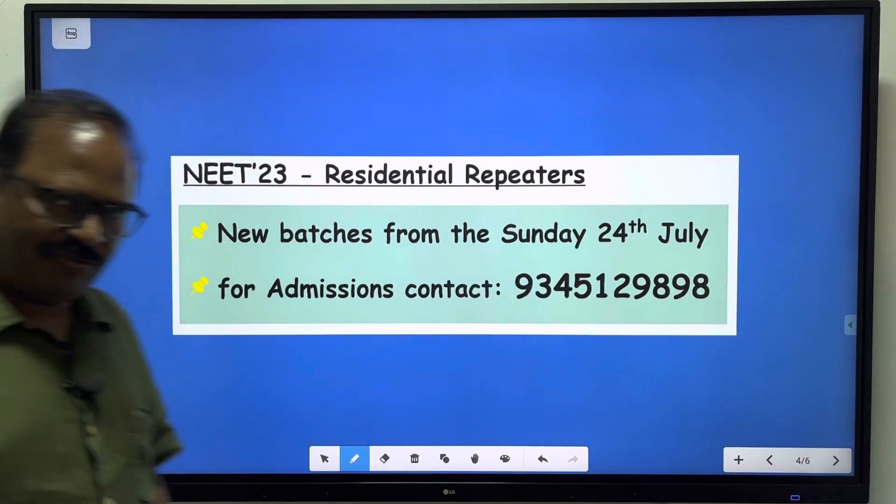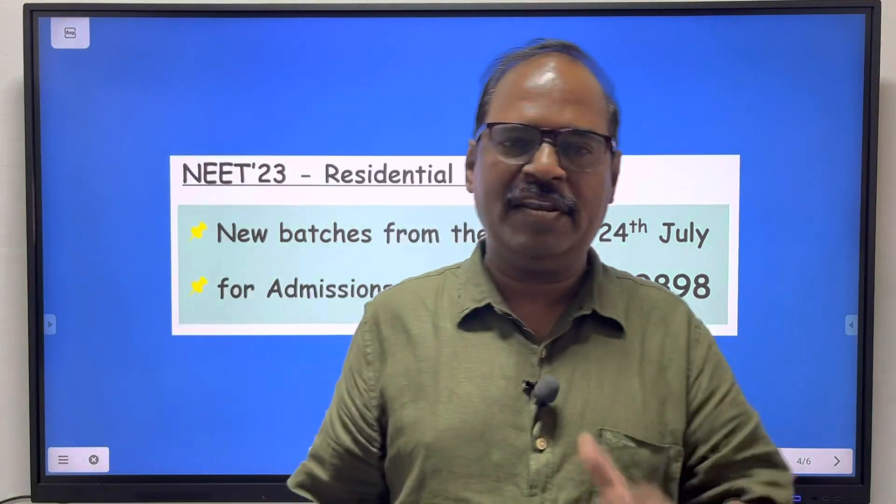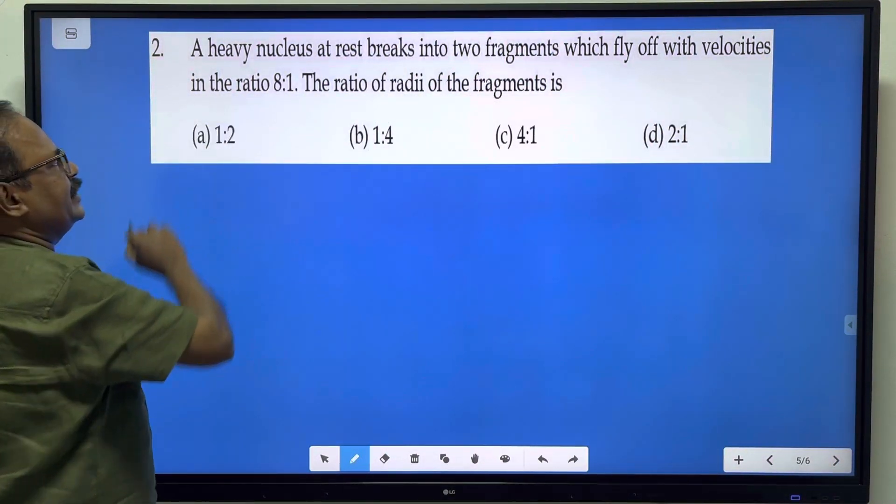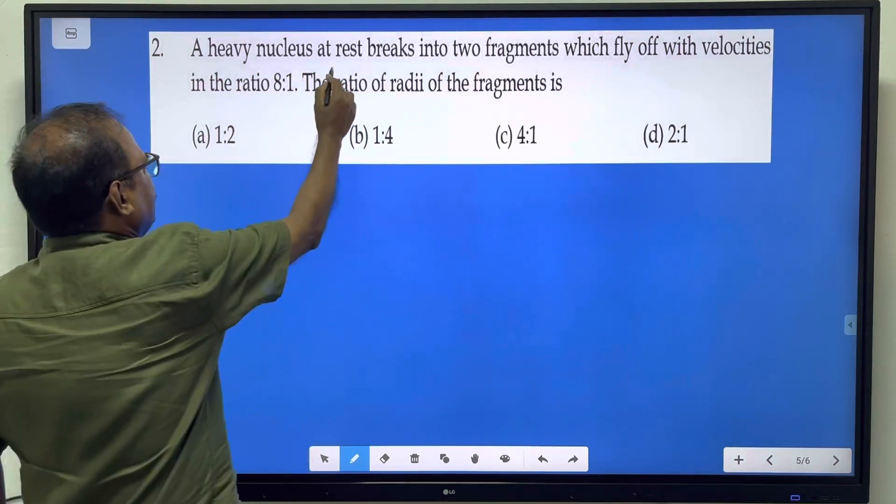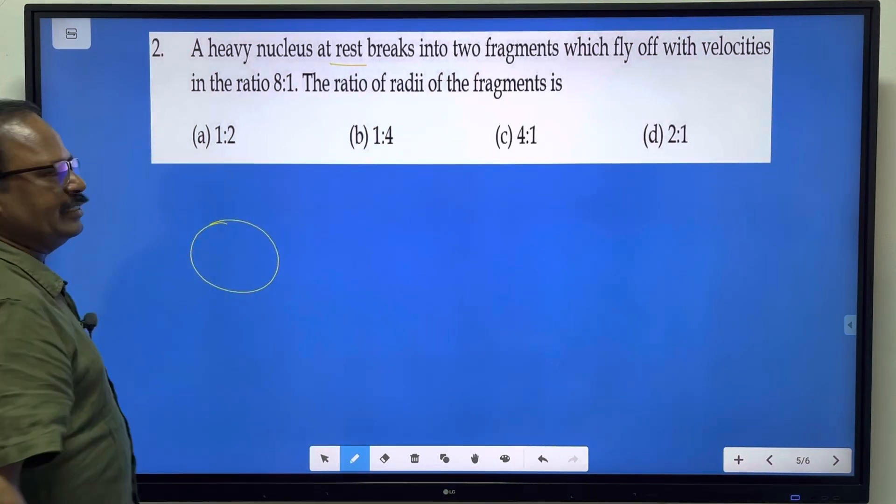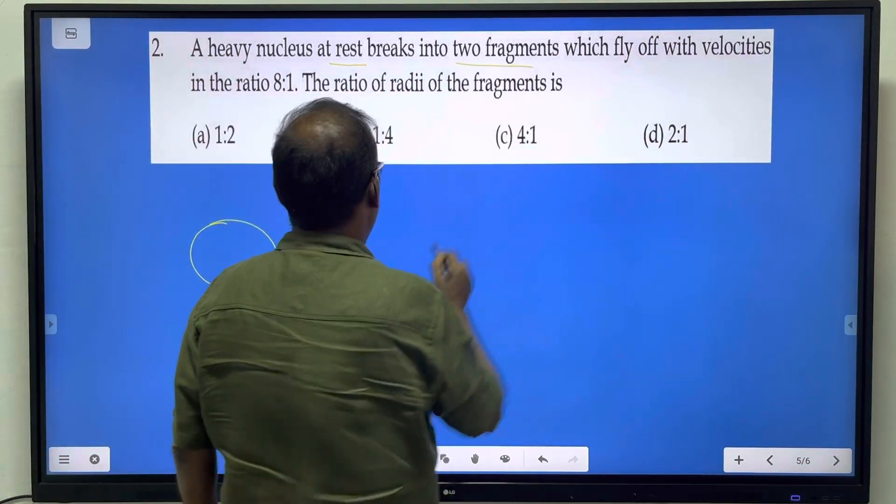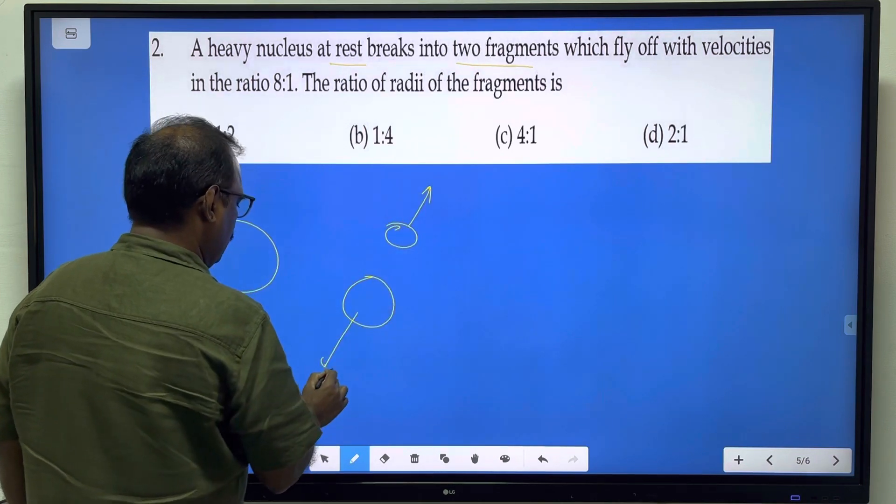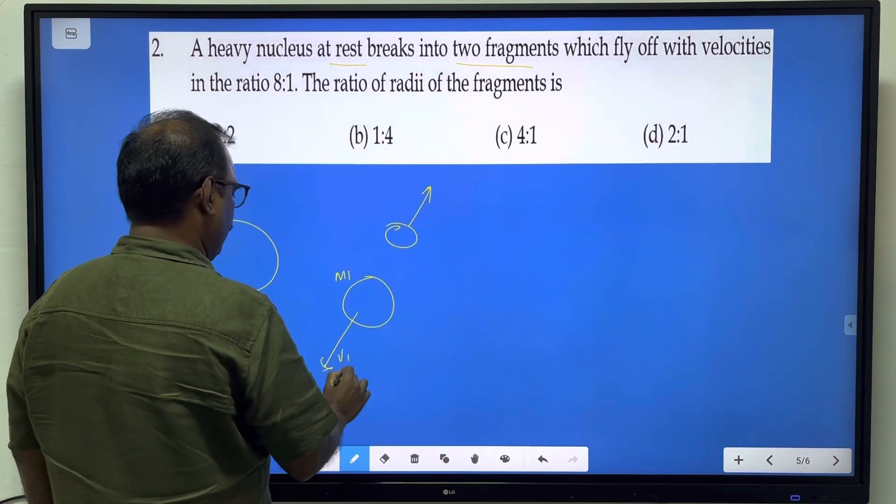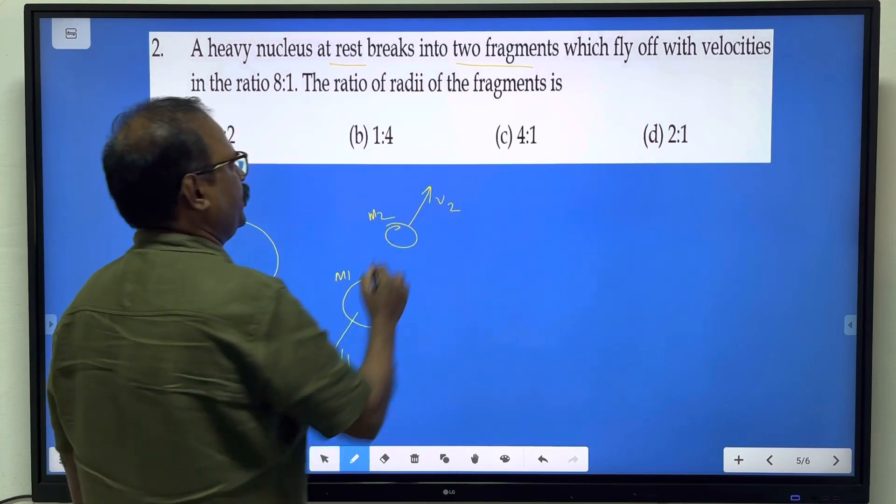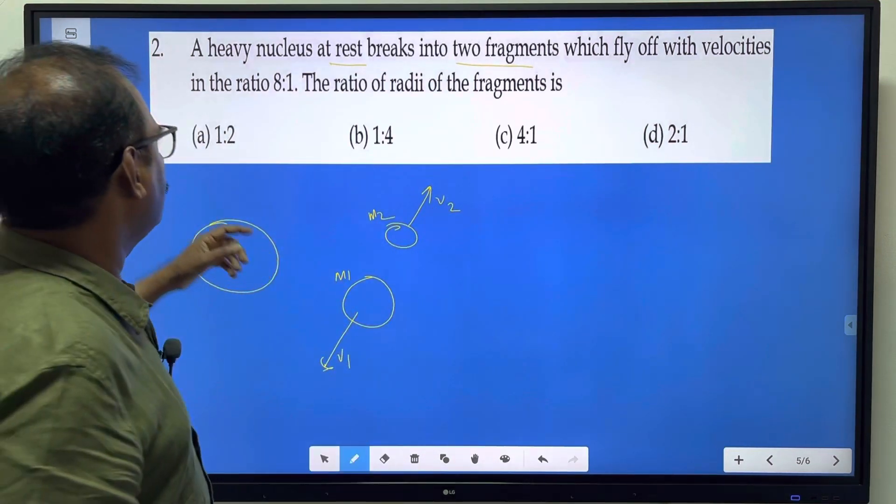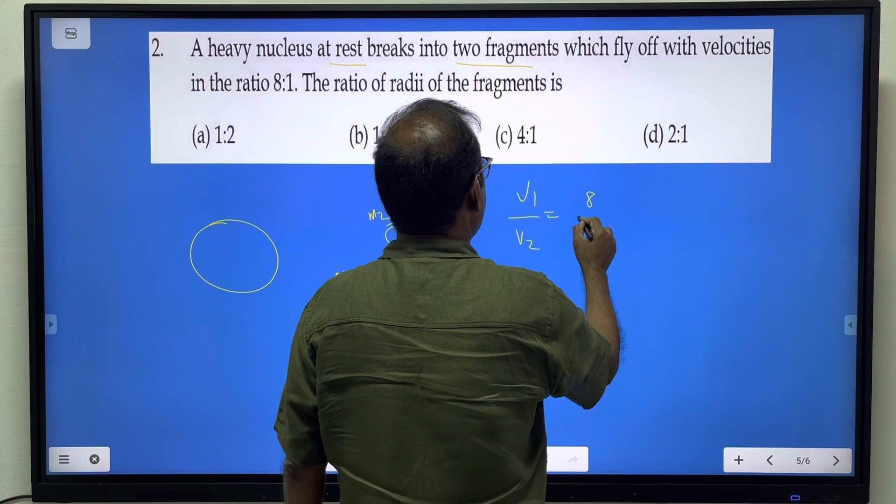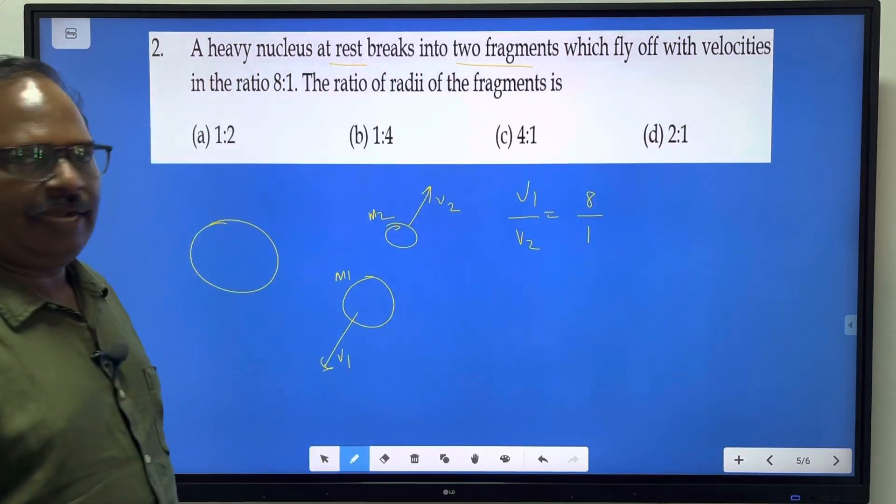Students, welcome to the second question. A heavy nucleus at rest breaks into two fragments. The fragments have mass m1 with velocity v1 and mass m2 with velocity v2. They fly off with velocities in the ratio 8 to 1, so v1 by v2 is 8 to 1. What is the ratio of the radii of the fragments?